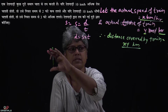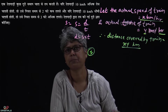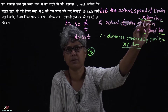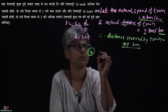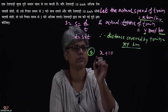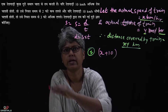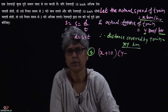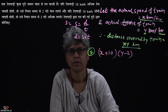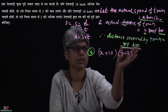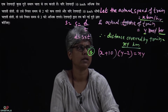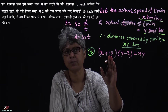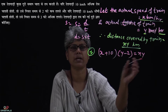We have two cases. In the first case: if the train would have been 10 km per hour faster, actual speed was x km per hour, so new speed becomes x plus 10. It would have taken 2 hours less than scheduled time, so new time is y minus 2. The same distance must be covered, equal to xy.